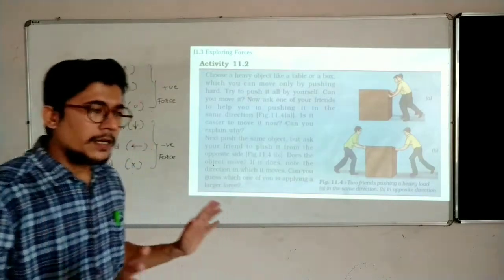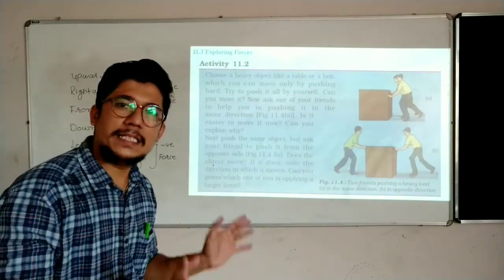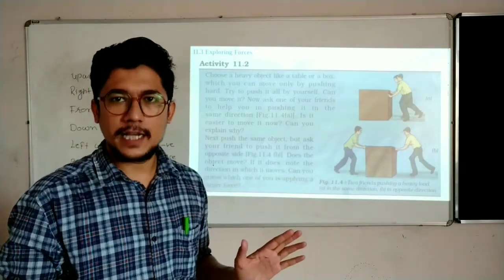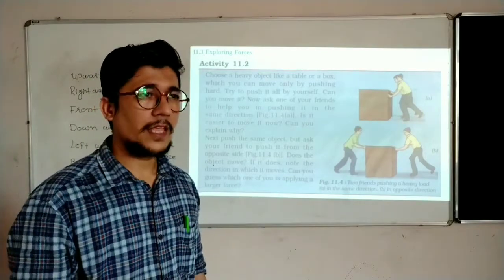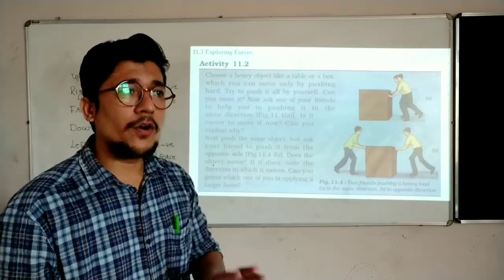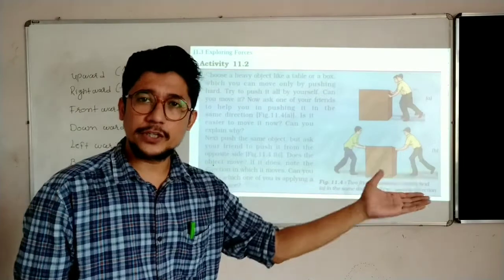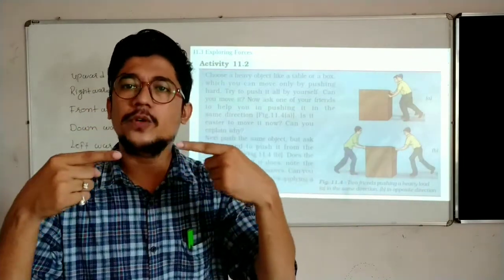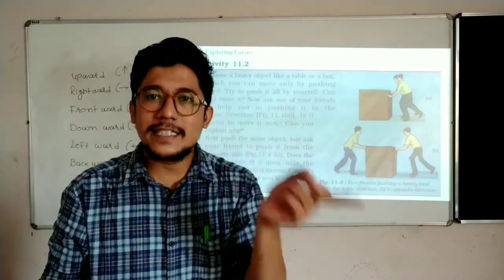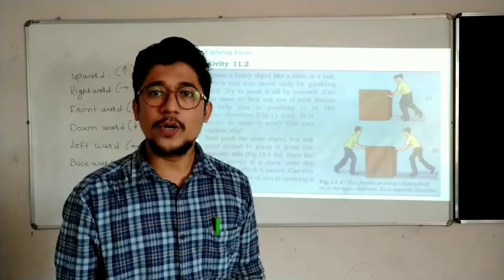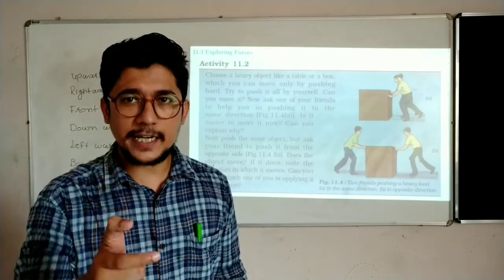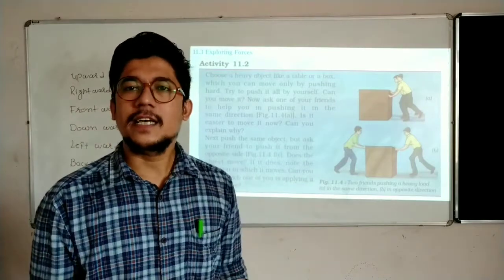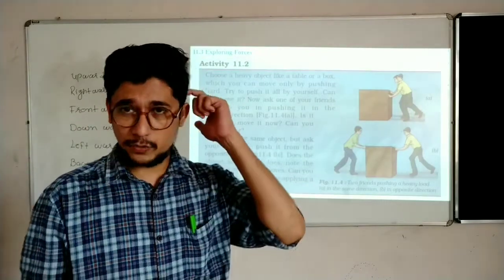So now what happens? Although the table is the same and you are also the same, there are majority of chances that the table will not move. Why is it not moving? Because your friend is pushing toward you and you are pushing toward him. So these two concentric forces are cancelling each other, and the net force acting on the table becomes zero. So there is no chance that the table will move from one end to another.